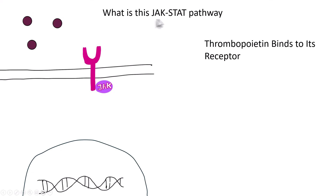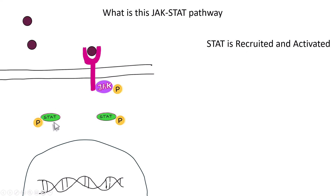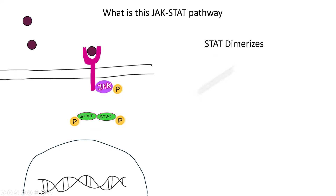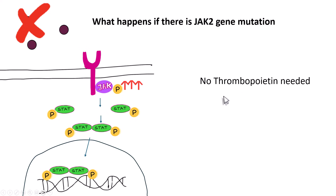The first step of the JAK-STAT pathway is that thrombopoietin binds to the growth factor receptor, where JAK gets activated by phosphorylation. After this activation, the STAT proteins are also recruited and activated, and finally the STAT proteins are dimerized. The dimerized STAT proteins enter the nucleus and activate genes responsible for megakaryocyte production. With a JAK-2 gene mutation, there is constitutively increased JAK-STAT pathway activity.